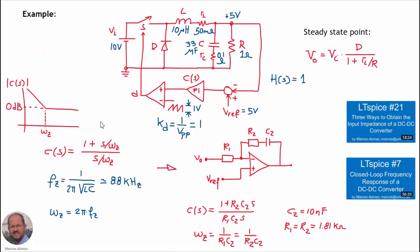For the example we are using the same values as in previous videos. In blue we have the different values of our converter, the different gains of the sensor and the PWM circuit. For the compensator we are using a PI compensator with a specific transfer function and corresponding values, implemented using an operational amplifier.